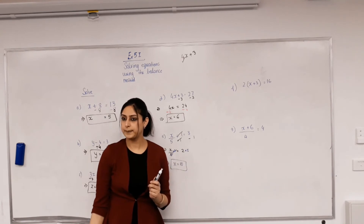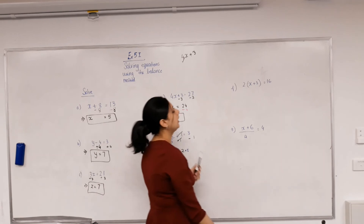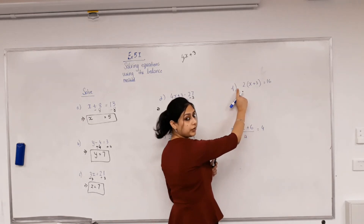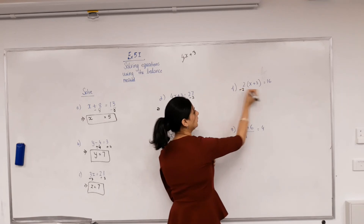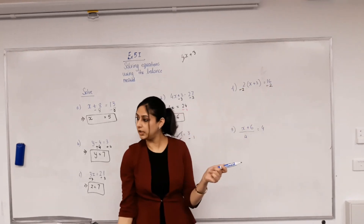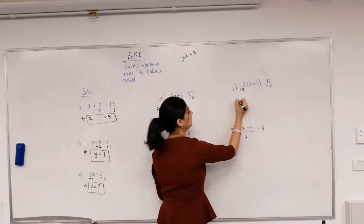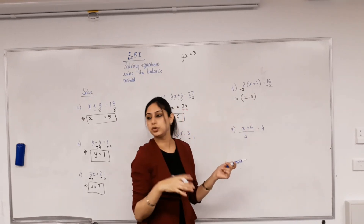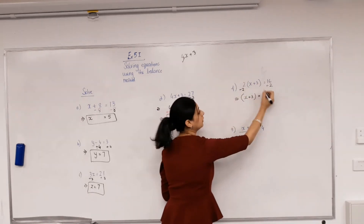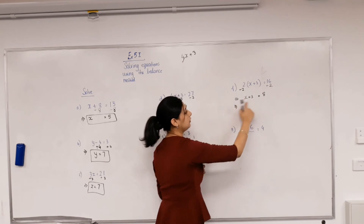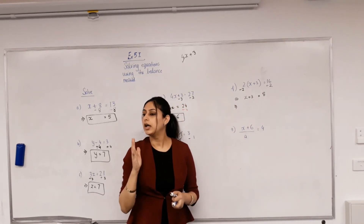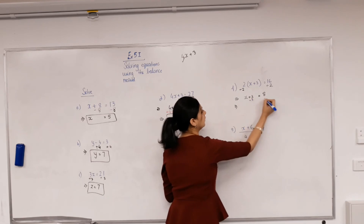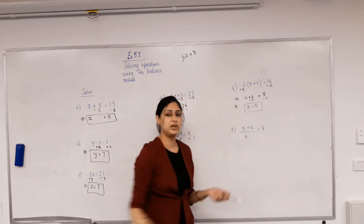Next equation: what was done to x first? Plus 3, and then times by 2. What do I get rid of first? The times. The opposite of multiplying is dividing - divide both sides by 2. 2 divided by 2 is 1, leaving x plus 3. Do I need the bracket now? No. 16 divided by 2 is 8. The inverse of adding 3 is minus 3 from both sides. x equals 5.